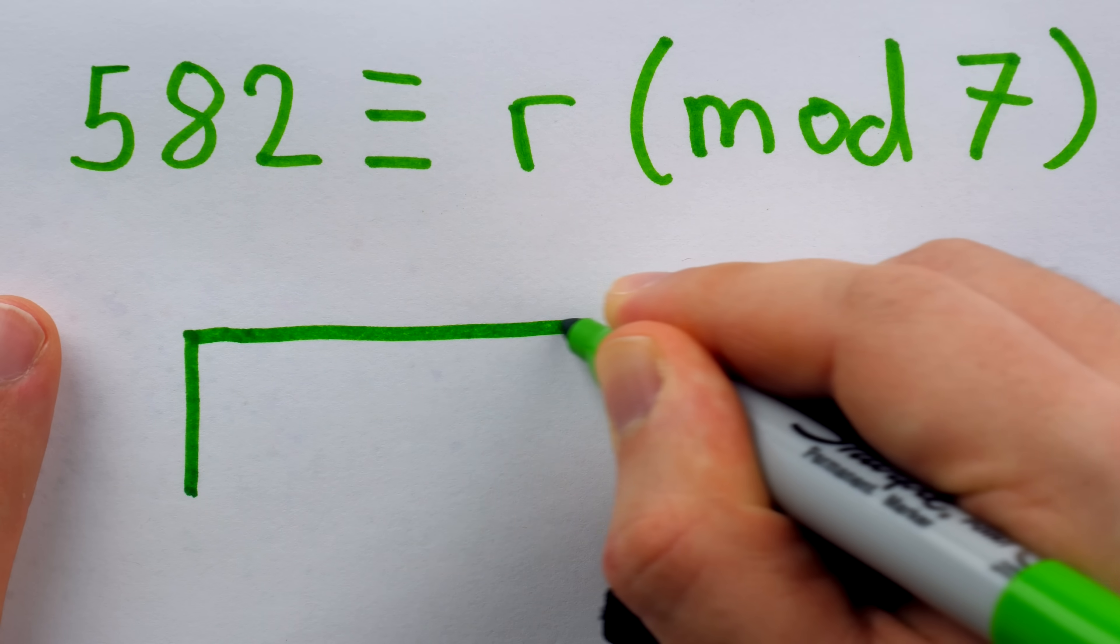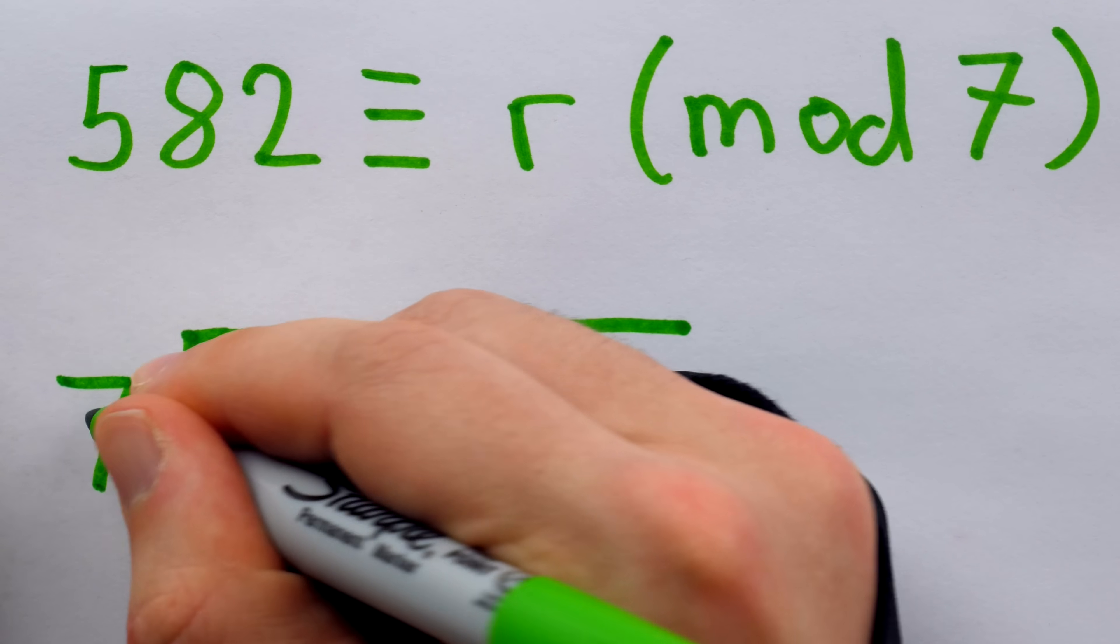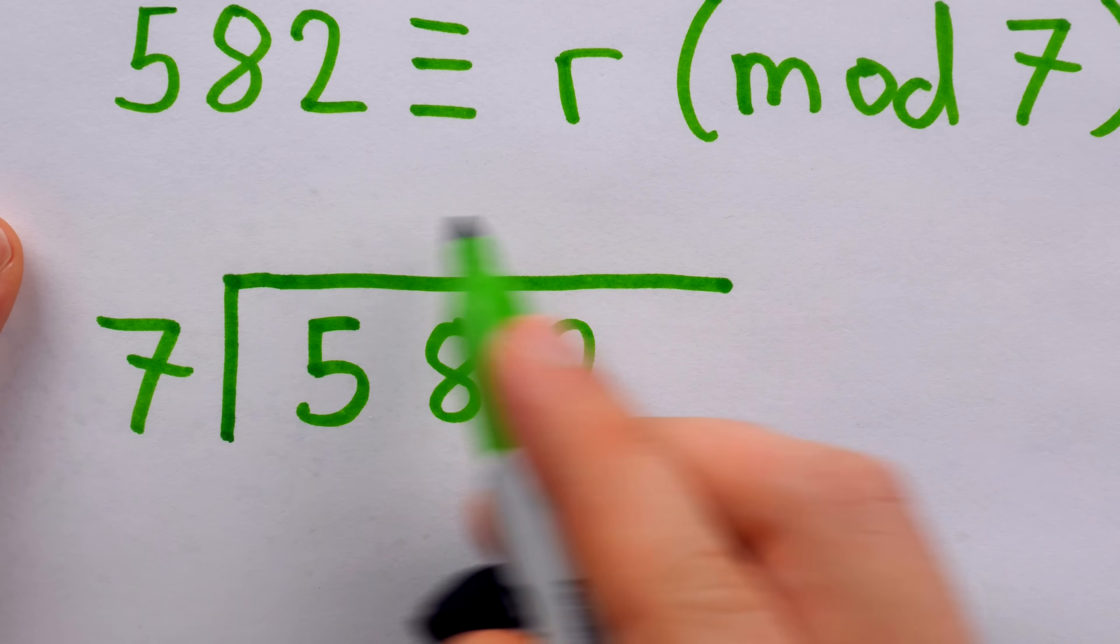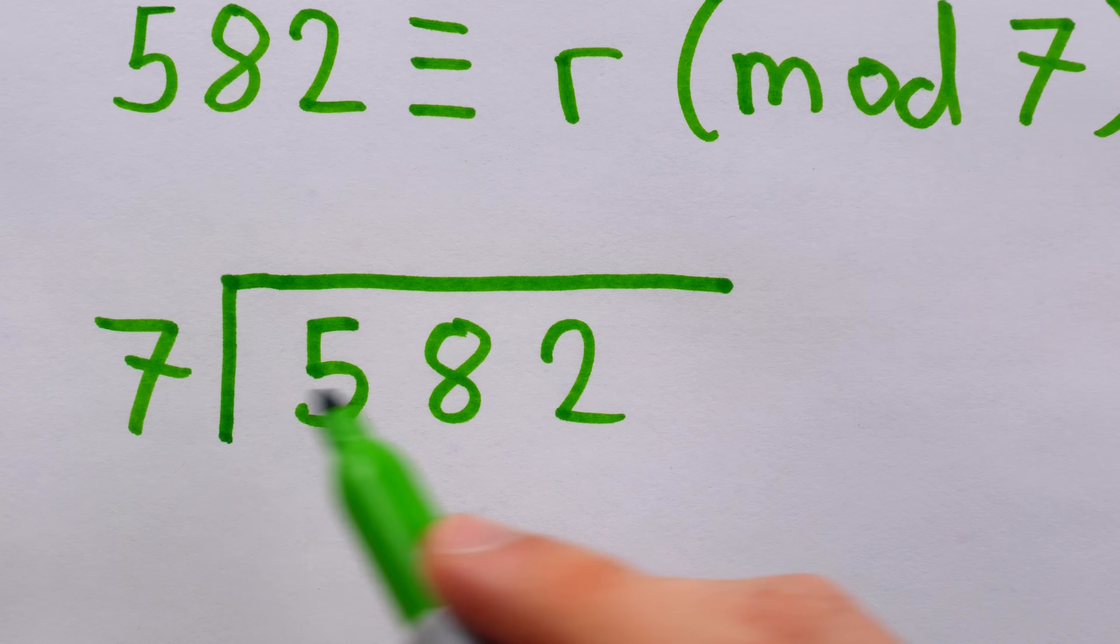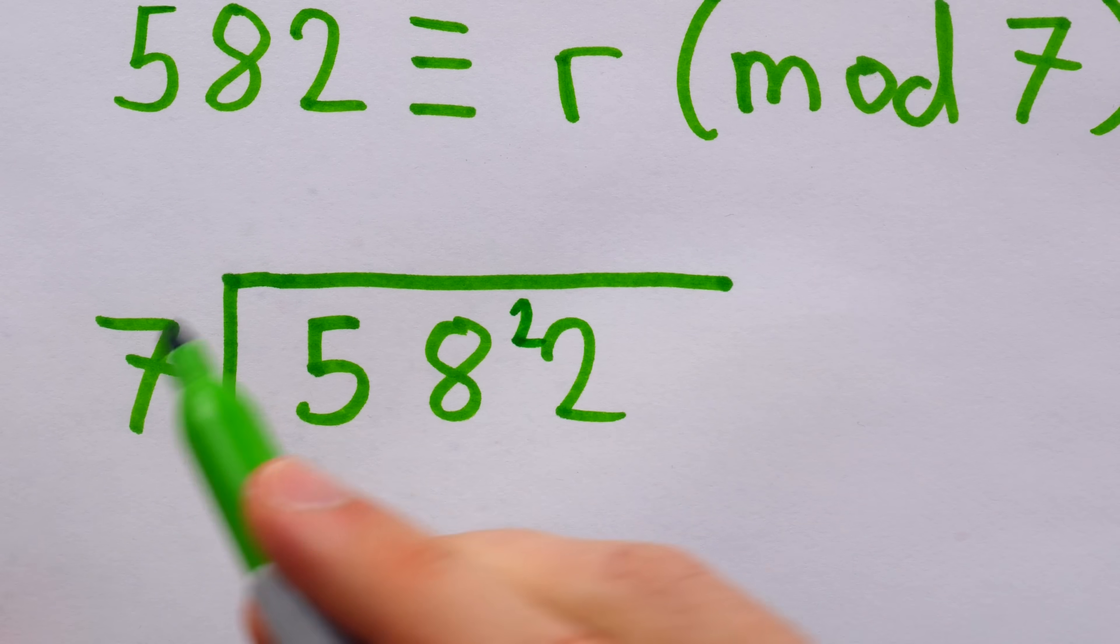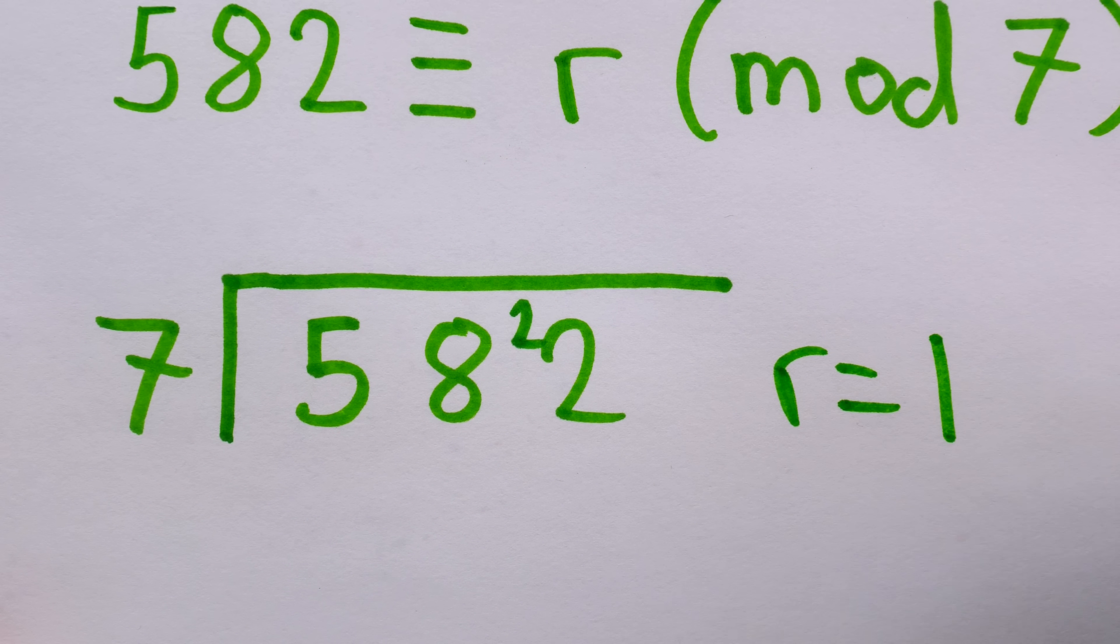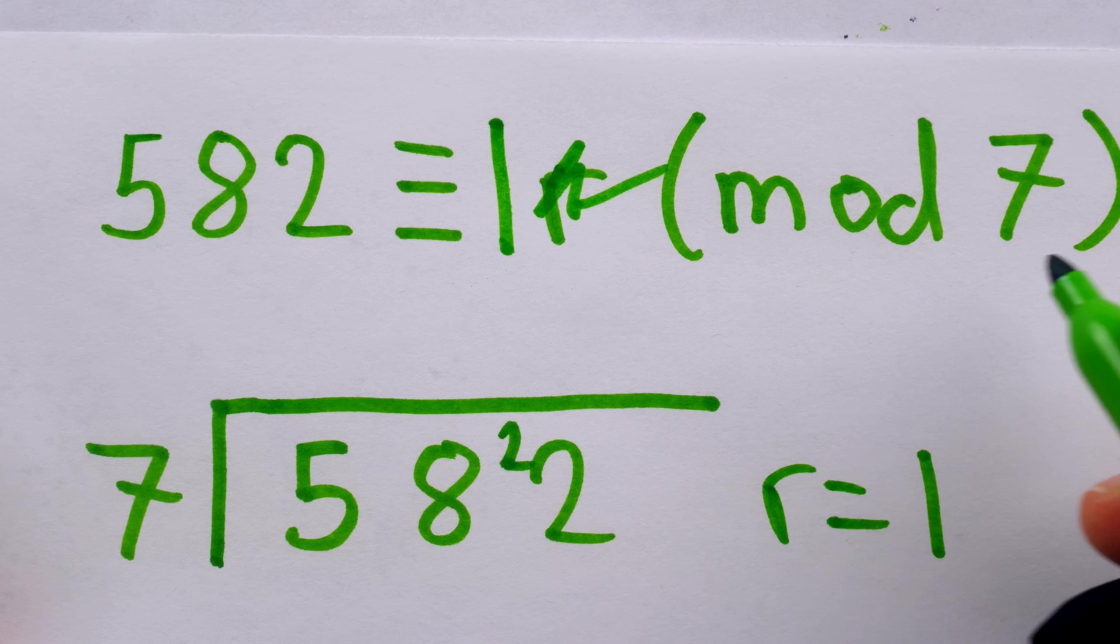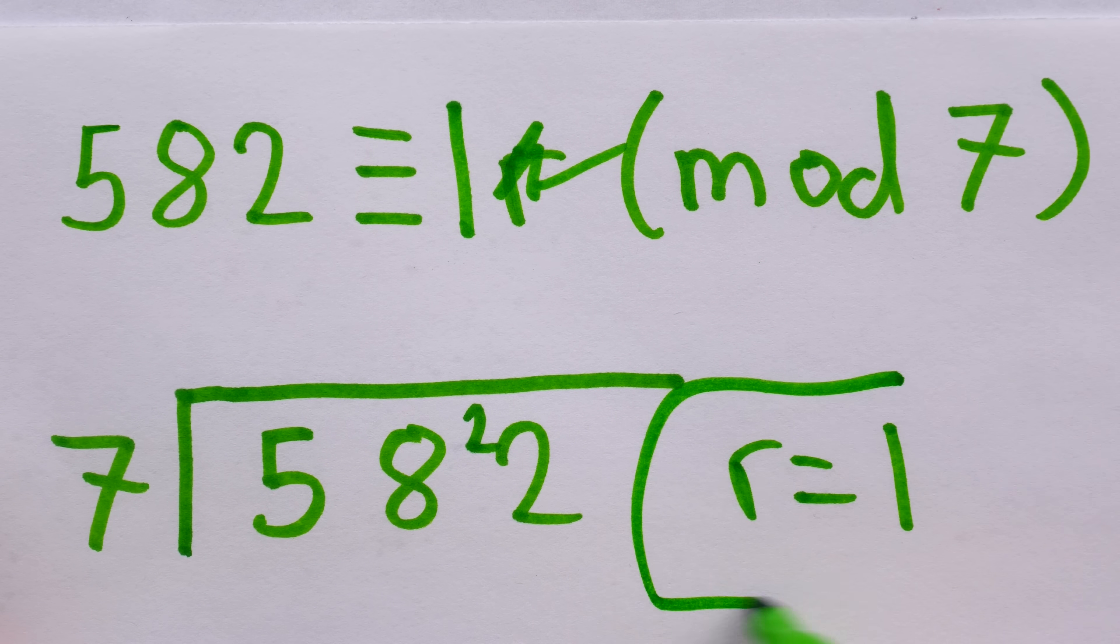To do that short division, I draw my cute little bus stop symbol. There's 582, the dividend, and 7, the divisor. We're just trying to find the remainder. So again, we'll just jot down those remainders. We don't need to write any numbers up here. Does 7 go into 5? No. Does 7 go into 58? Yes, 8 times. 7 times 8 is 56. There's a remainder of 2. Does 7 go into 22? Yes, 3 times with a remainder of 1. So 582 is actually congruent to 1 mod 7 because division of 582 by 7 results in a remainder of 1.